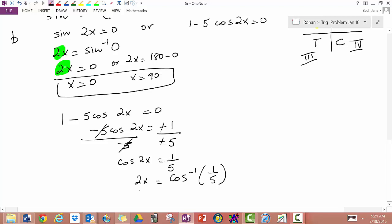And that gives us, and cosine is positive in the fourth quadrant. You are only being asked to give solutions between 0 and 180. So we don't need to worry about the fourth quadrant here. We get cosine inverse of 1 fifth.